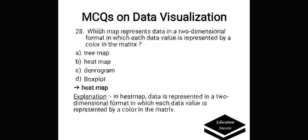Which map represents data in a two-dimensional format in which each data value is represented by a color in the matrix? Options are: A. Tree map, B. Heat map, C. Dendrogram, D. Box plot. Correct answer is heat map. In a heat map, data is represented in a two-dimensional format in which each data value is represented by a color in the matrix.